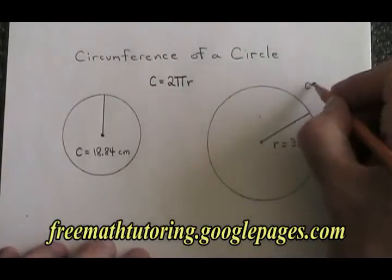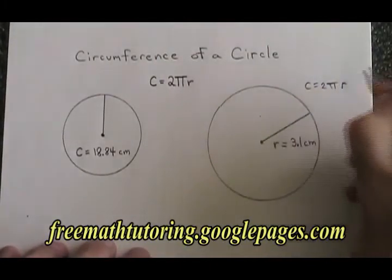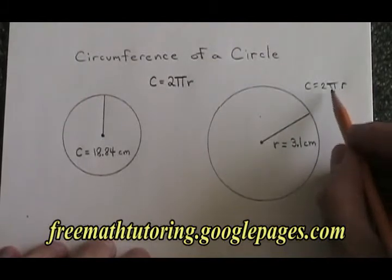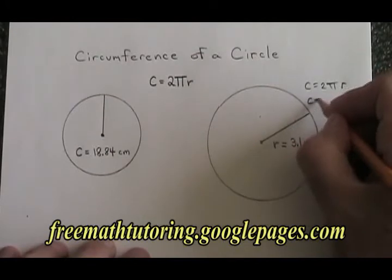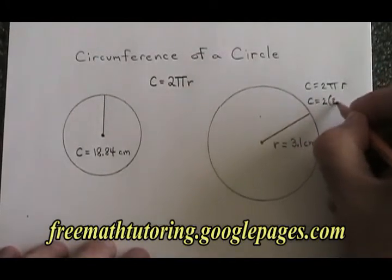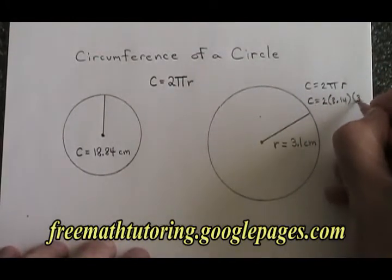I'll write my formula, c equals 2 pi r. I'll write it again but I'll replace pi with 3.14 and I'll replace the r with 3.1. c is equal to 2 times 3.14 times 3.1.